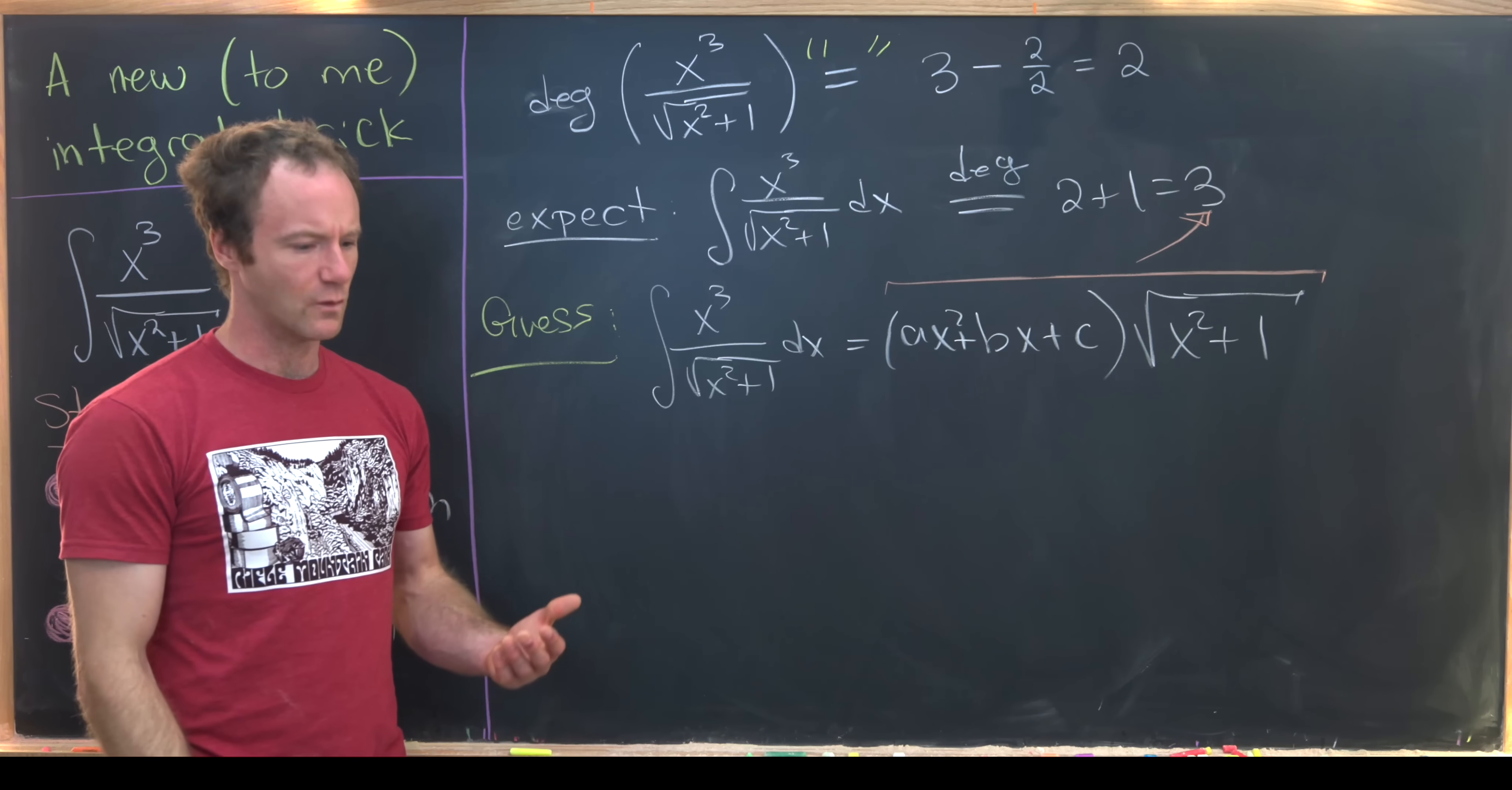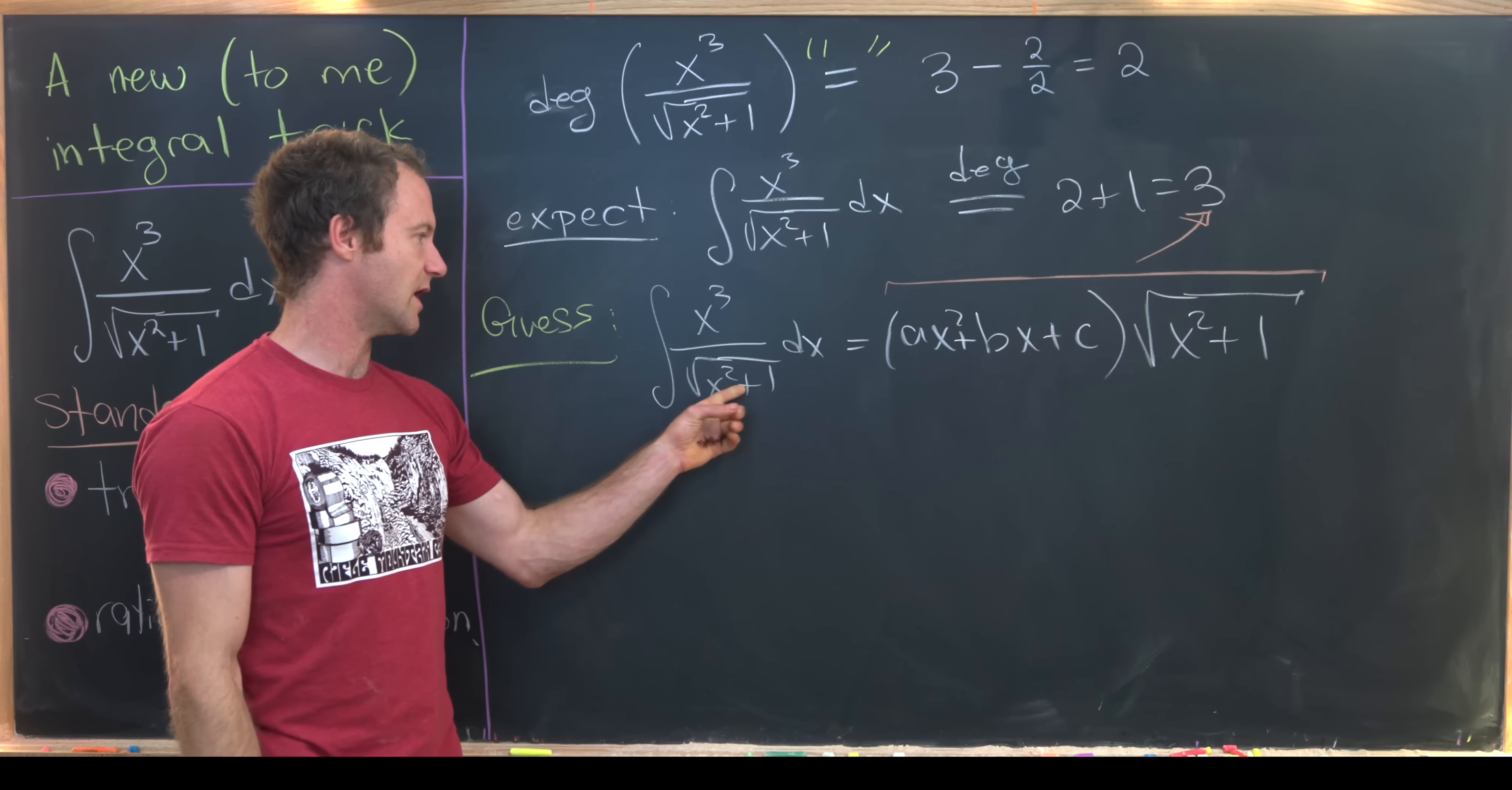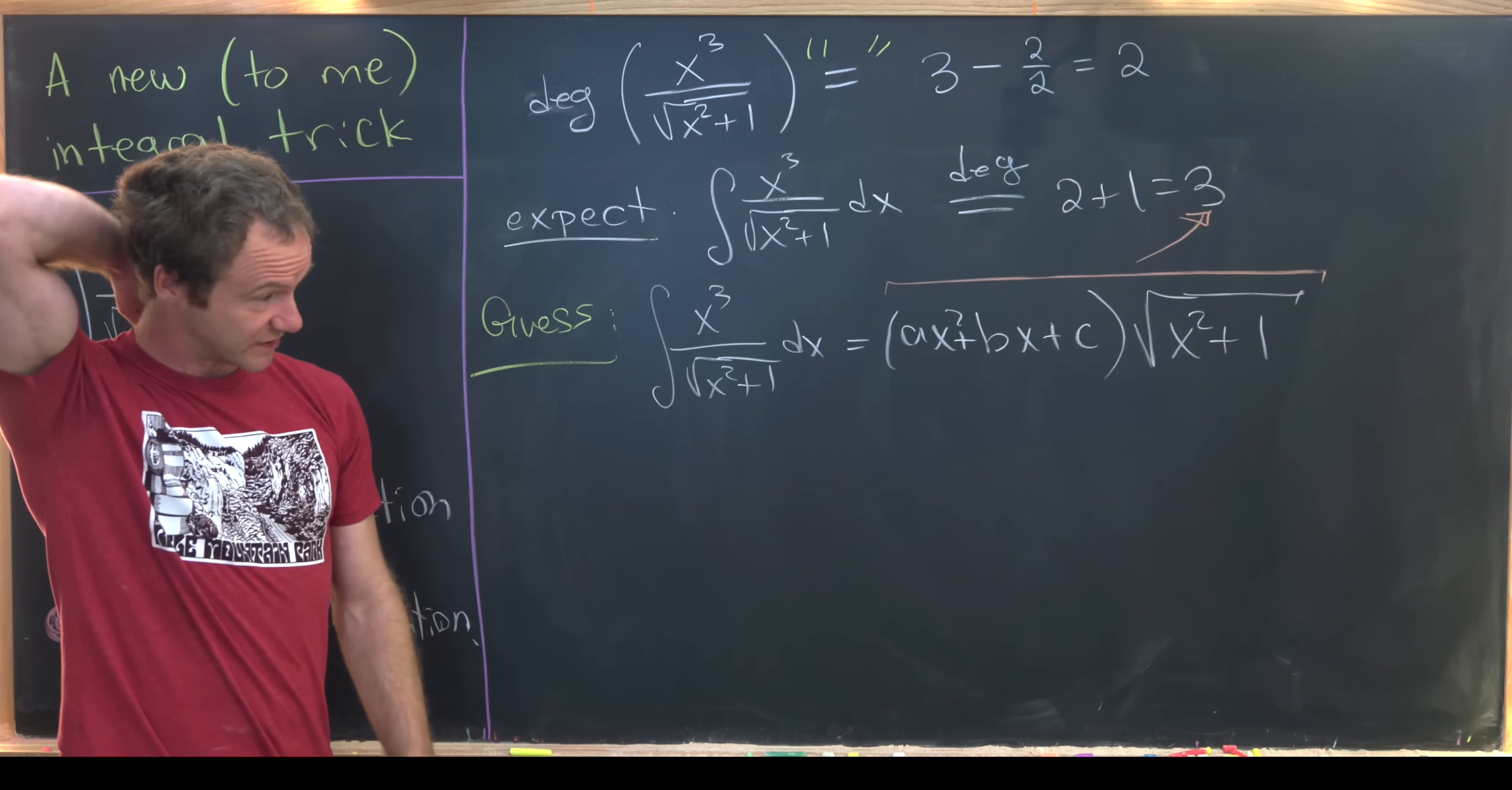Now you might say, well, why are we putting the square root of x squared plus 1 in here? Well, that's because our integrand is made up of that type of function. So we expect the antiderivative to include that type of function as well.